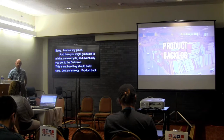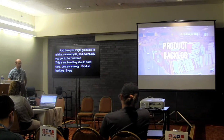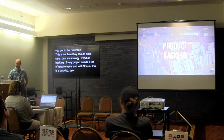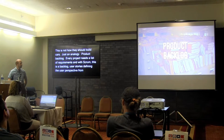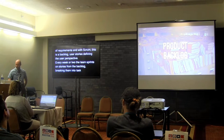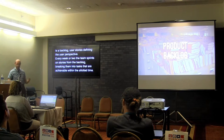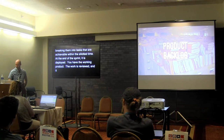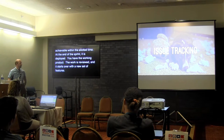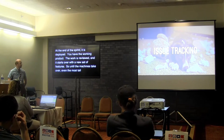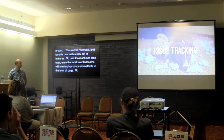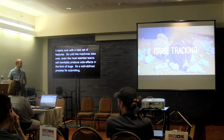Every project needs a list of requirements, and with Scrum this takes the form of a product backlog — a list of user stories defining the desired behaviors of the system from the perspective of its users. Every week or two the team sprints on stories from the backlog, breaking them into tasks achievable within the allotted time. At the end of the sprint, the work is deployed so you have a working product, the work is reviewed, and it starts over with a new set of features. Even the most talented teams will inevitably produce bugs, so a well-defined process for submitting, tracking, and fixing bugs is essential to quality software.